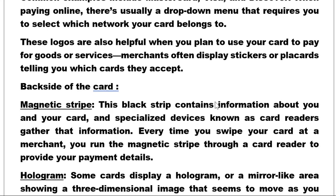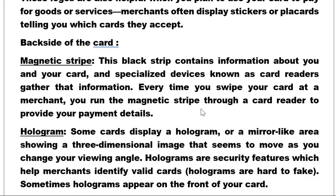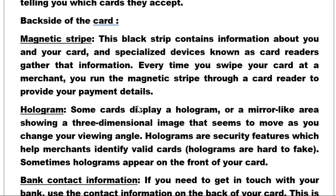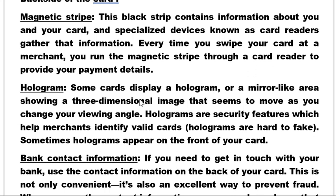On the back of the card, the magnetic strip contains information about you and your card. A specialized device known as a card reader gathers that information every time you swipe your card. Nowadays, magnetic strip cards have been replaced by chip cards. Some cards also display a hologram — a mirror-like area showing a three-dimensional image that seems to move as you change the viewing angle. Holograms are security features that help merchants identify valid cards and are hard to fake.